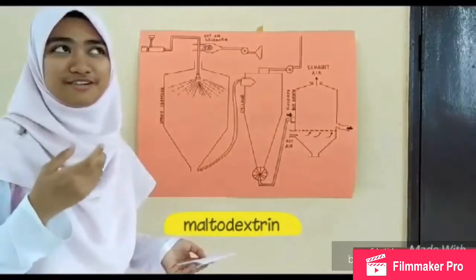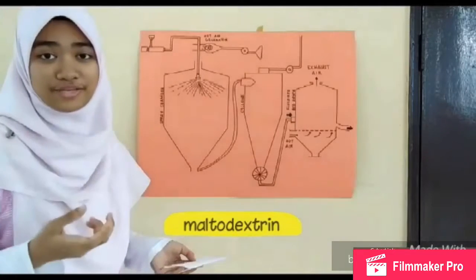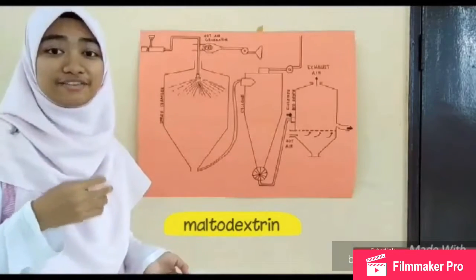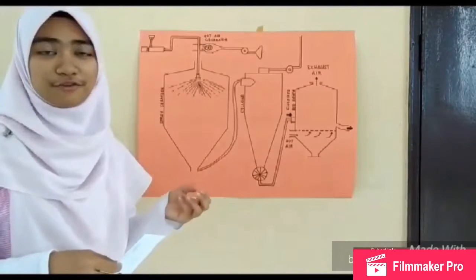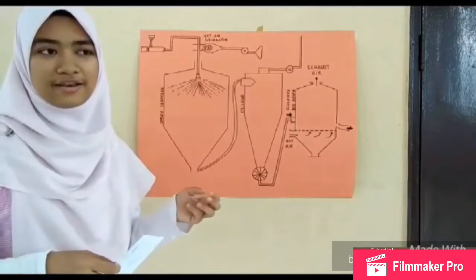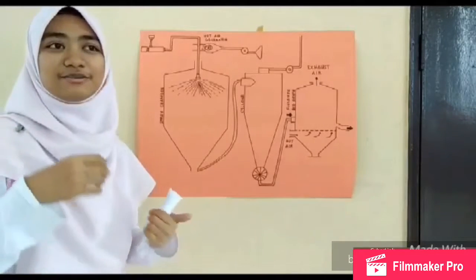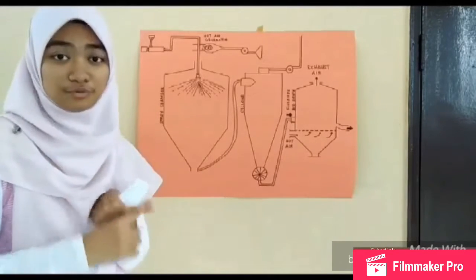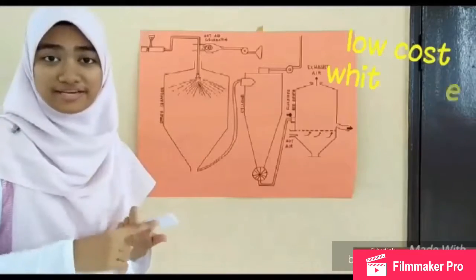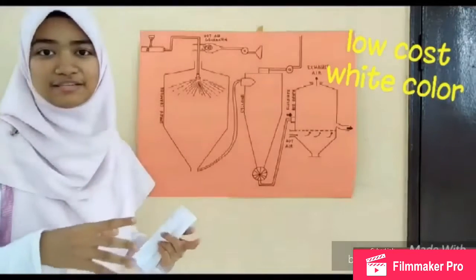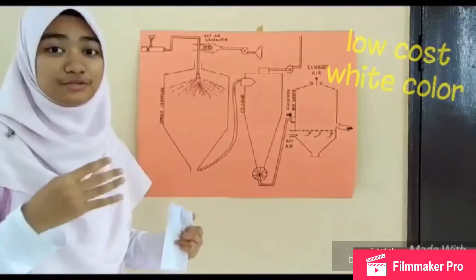Maltodextrin is also hygroscopic which facilitates the drying process. It will absorb moisture from the powder and make the drying process much easier. It is also low cost and white in color so it won't affect the color of the sour soup powder.